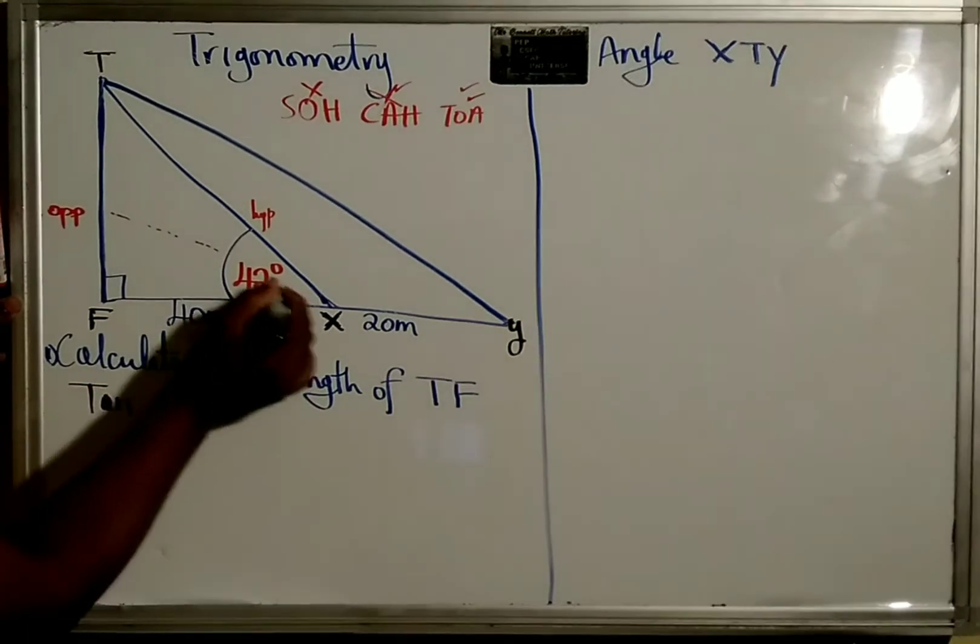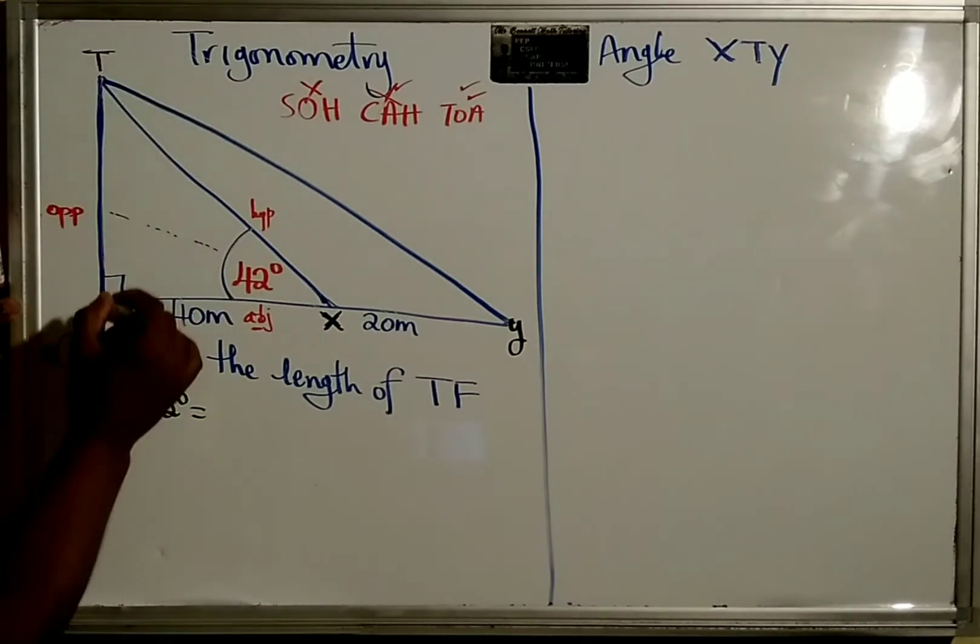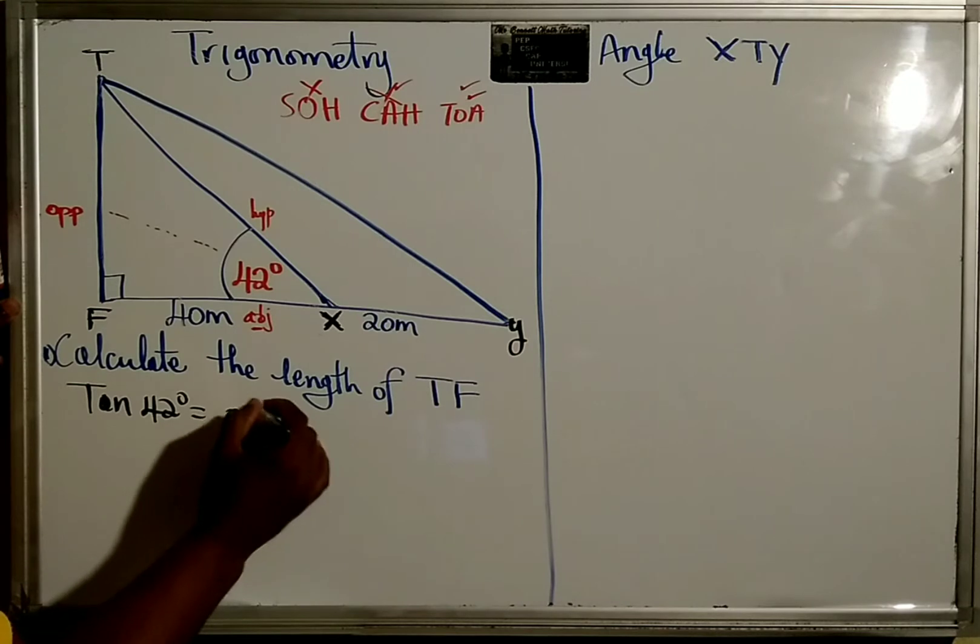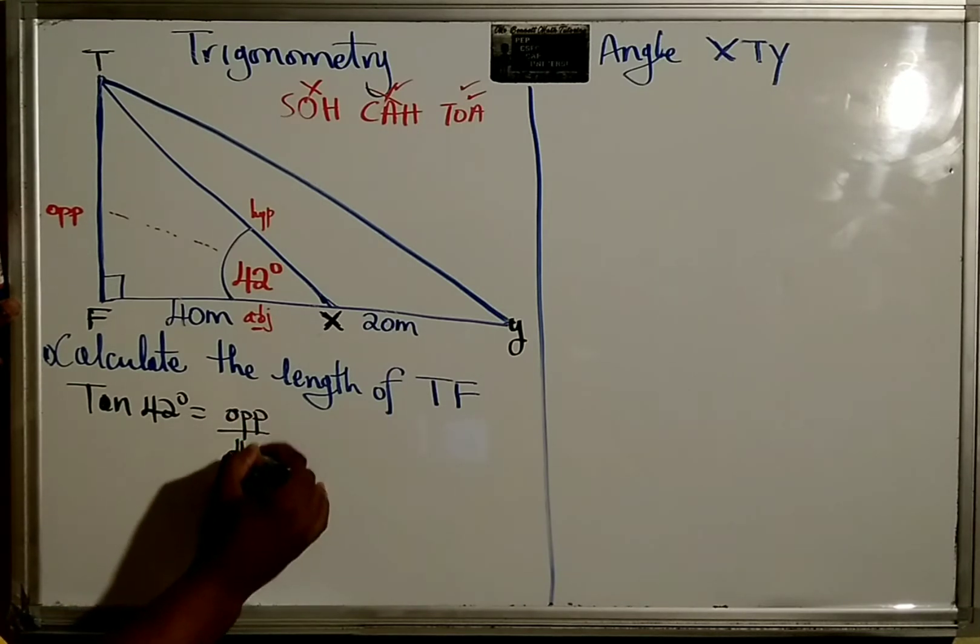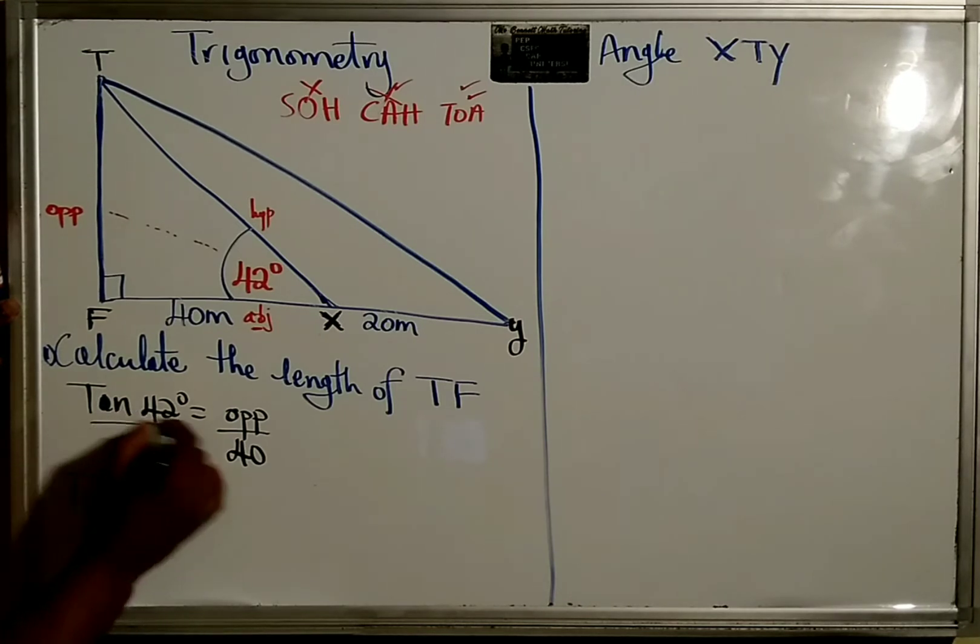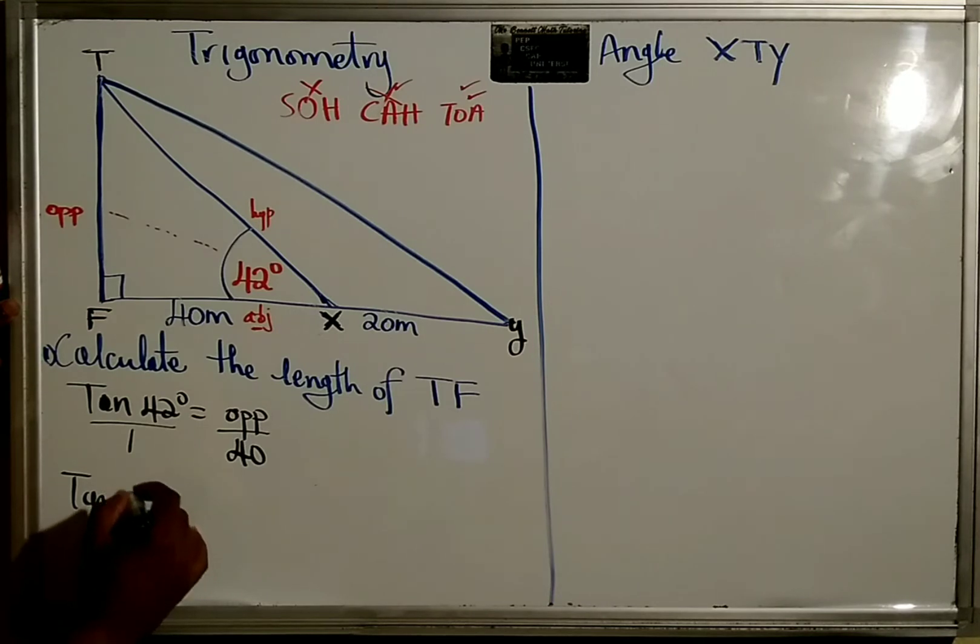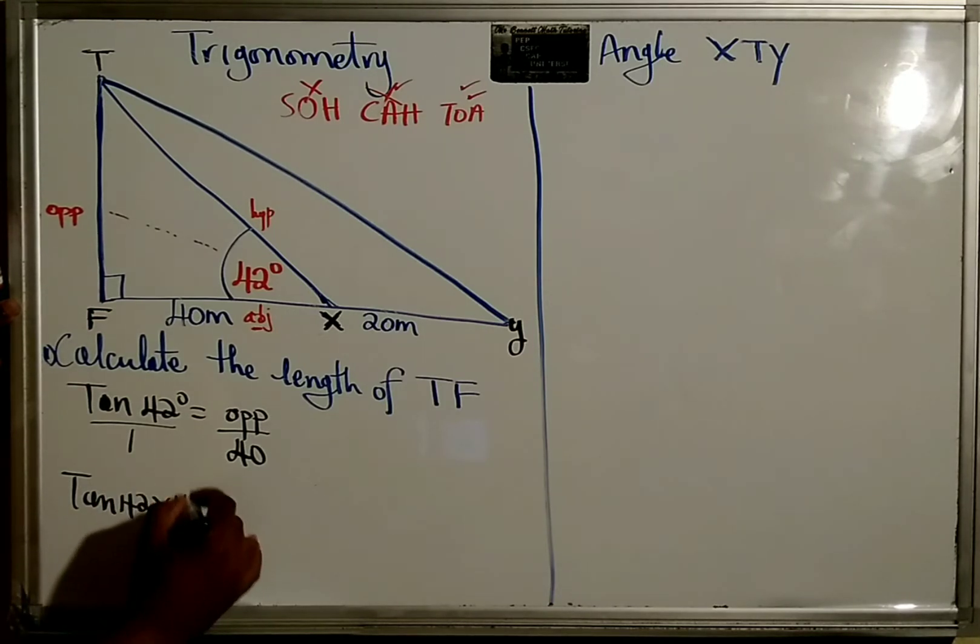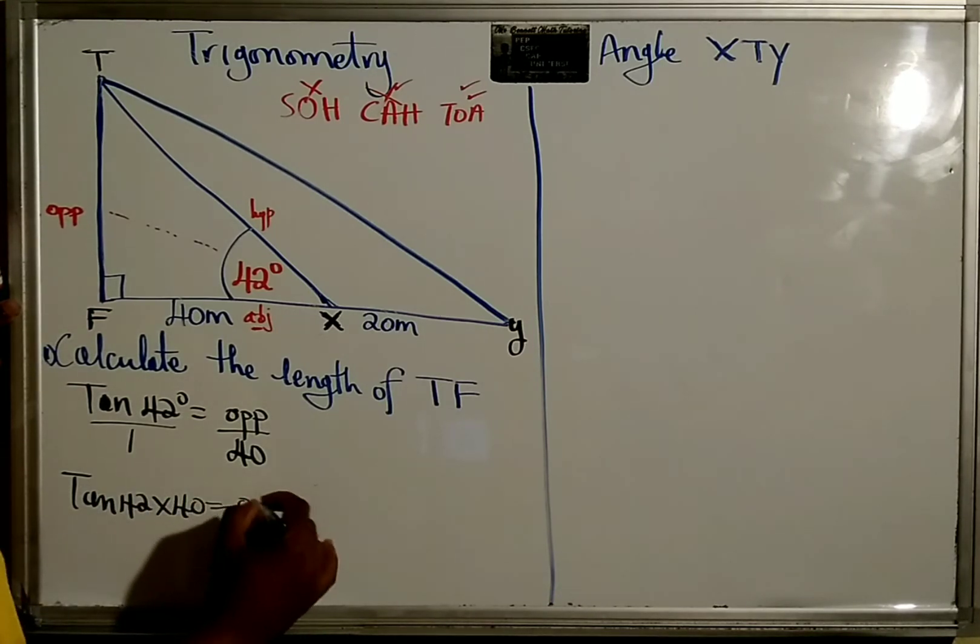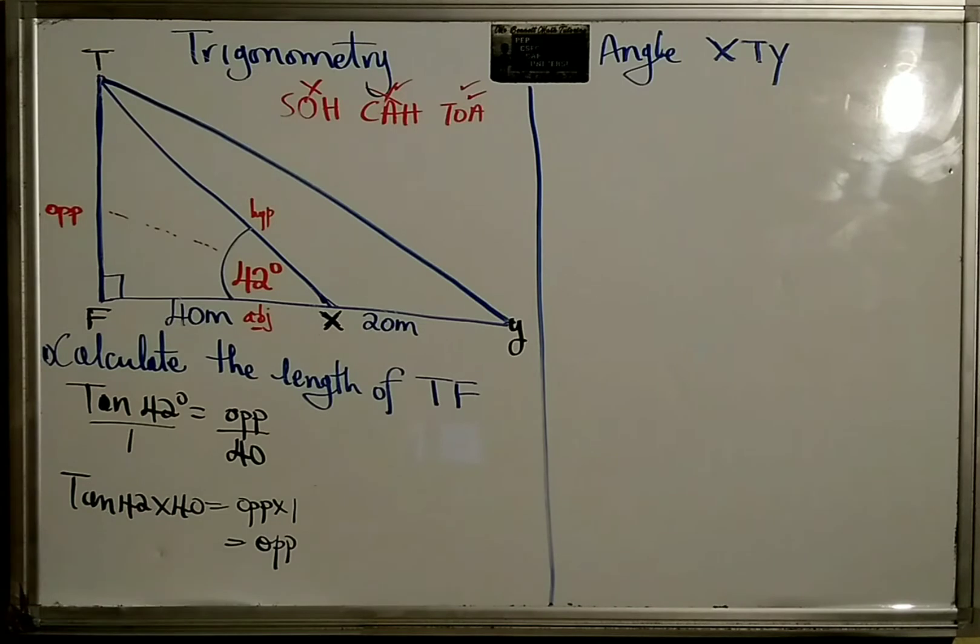So tan of the angle we're looking for, which is 42 degrees, equals opposite over adjacent. The adjacent side is 40. So tan times 40: tan 42 times 40 equals opposite times 1, and anything times 1 is that thing. So we have tan 42 times 40.